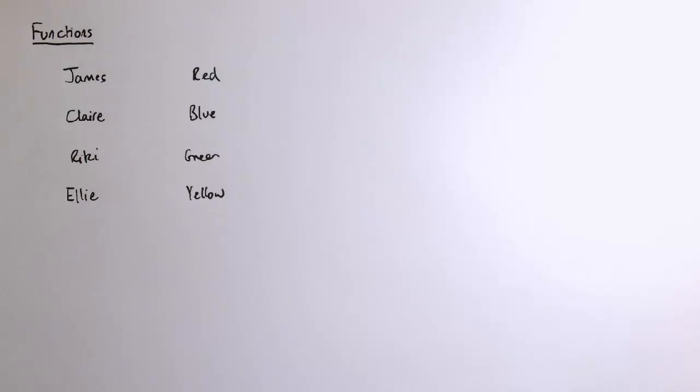A function is just a rule which maps one set of objects to another. So for example I might map a group of people to their favorite colours.